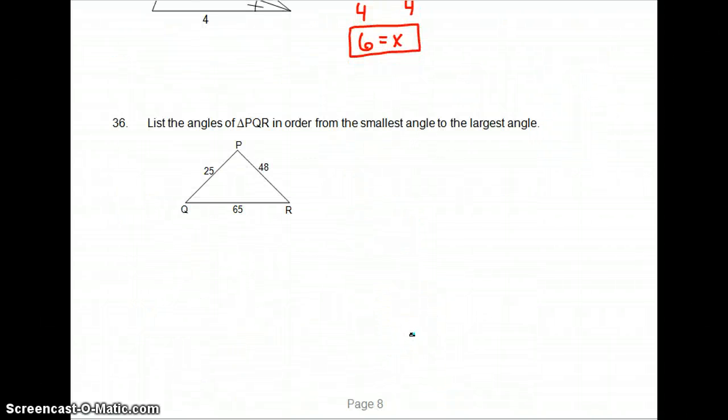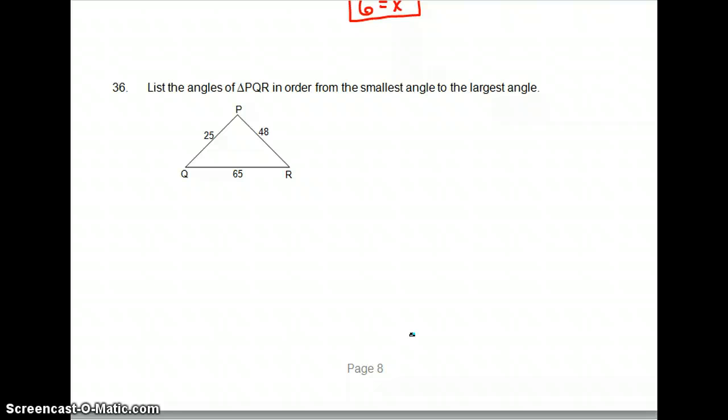36 asks to list angles of PQR in order from the smallest to the largest. We know the smallest angle is across from the smallest side. So if we find the smallest side over here, that would be 25. So this is going to be the smallest angle.